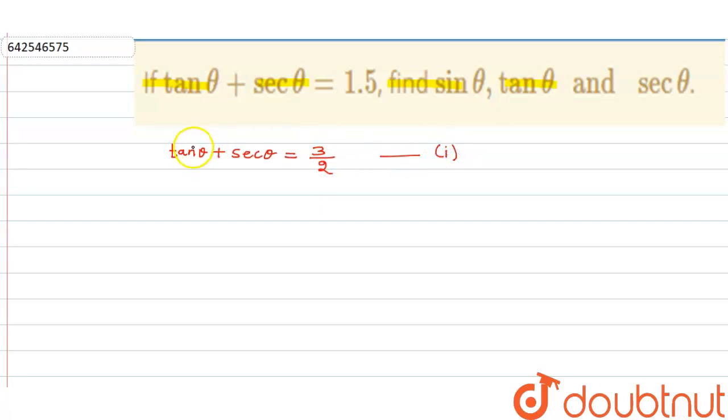Now what we do is just change all the trigonometric ratios to sin cos form. So this is sin θ upon cos θ plus 1 upon cos θ is equal to 3 by 2. This can be written as sin θ plus 1 upon cos θ equals 3 by 2, so cos θ upon 1 plus sin θ will be 2 by 3.